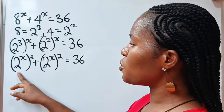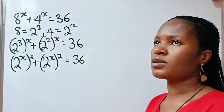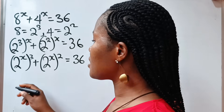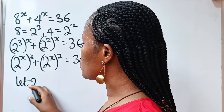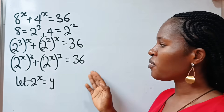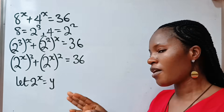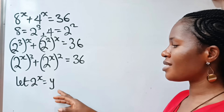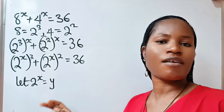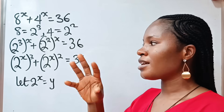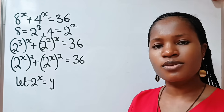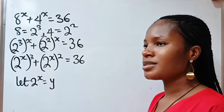Now we have 2 to the power of x appearing twice. We can call it something. So let 2 to the power of x be equal to y. Now some of you will think you have found the solution — no, remember that the answer is not y. We are looking for x and not y. So we still have a long way to go, and there are some solutions that will not be used as y. Stay tuned and see how we do that.